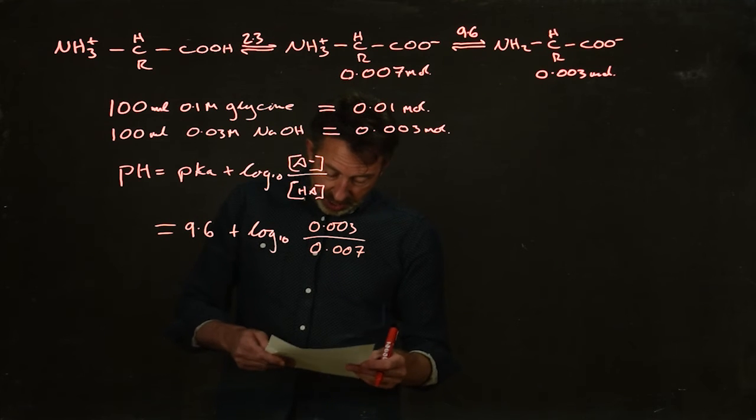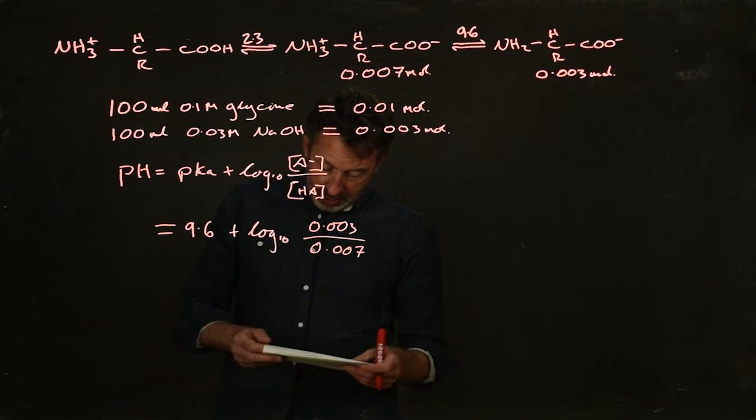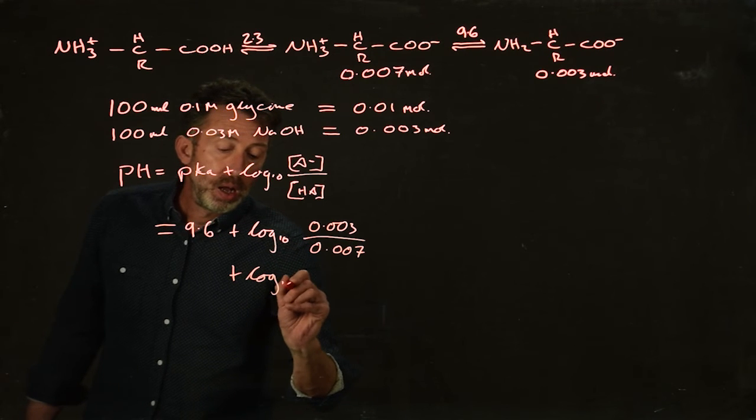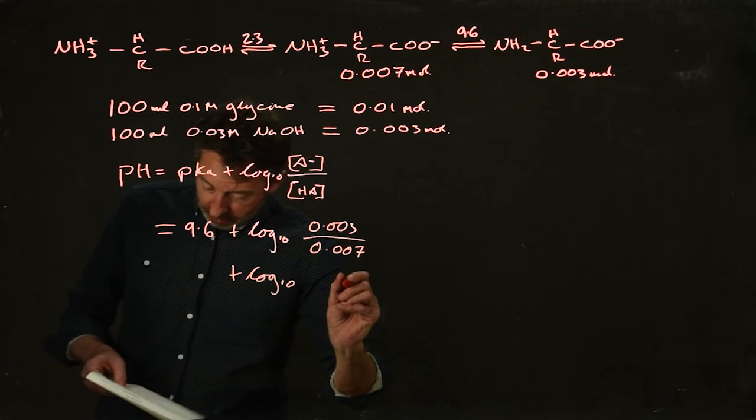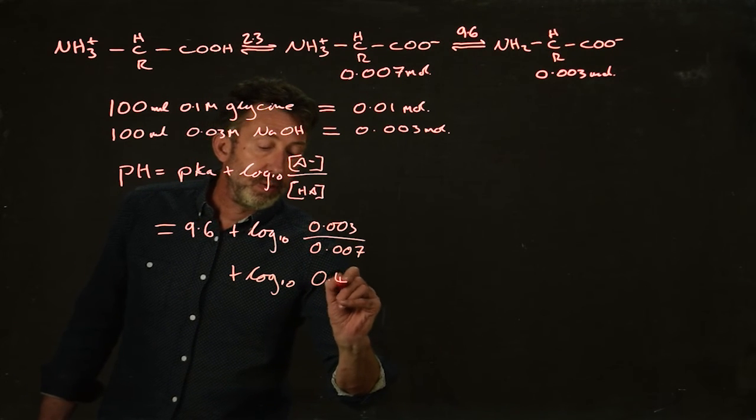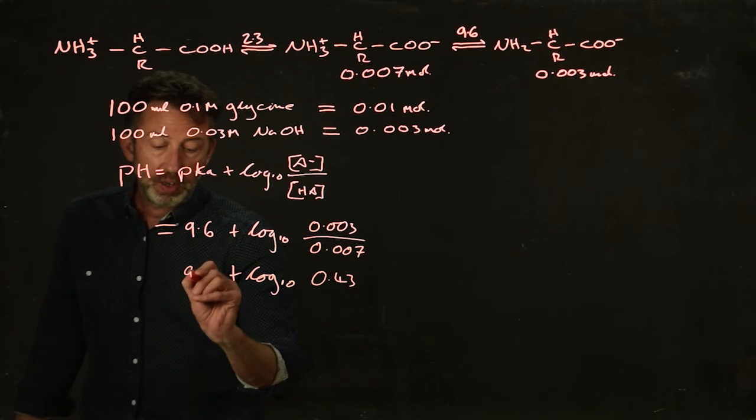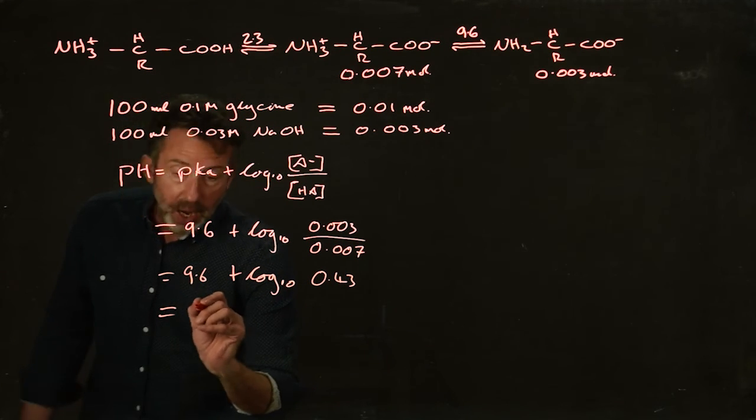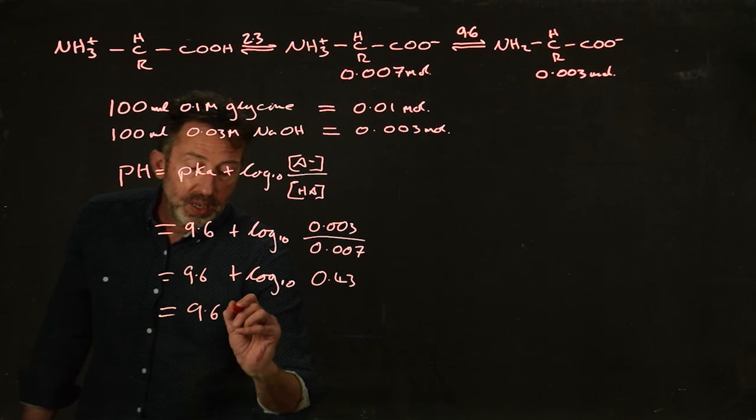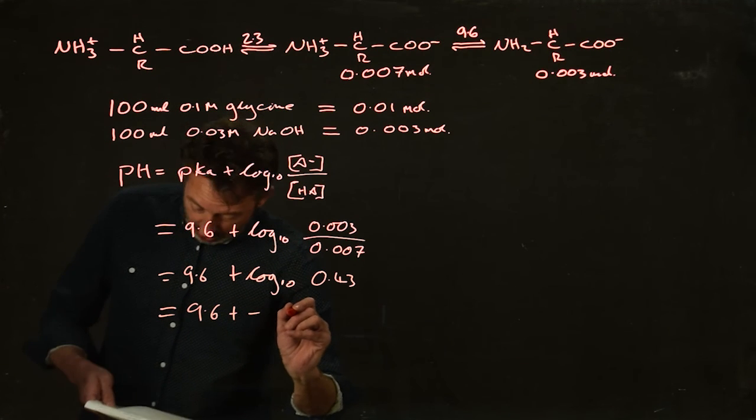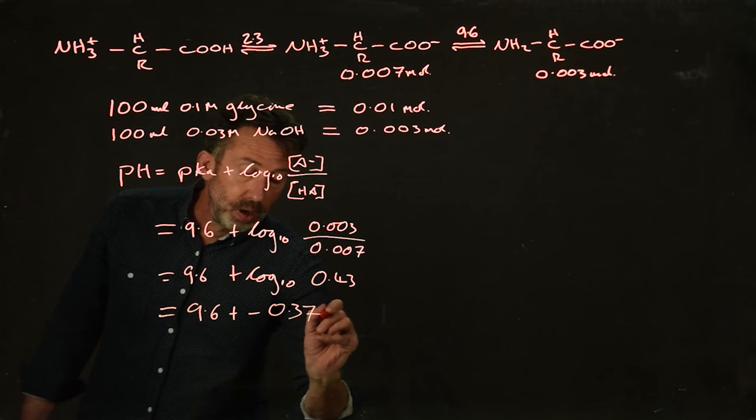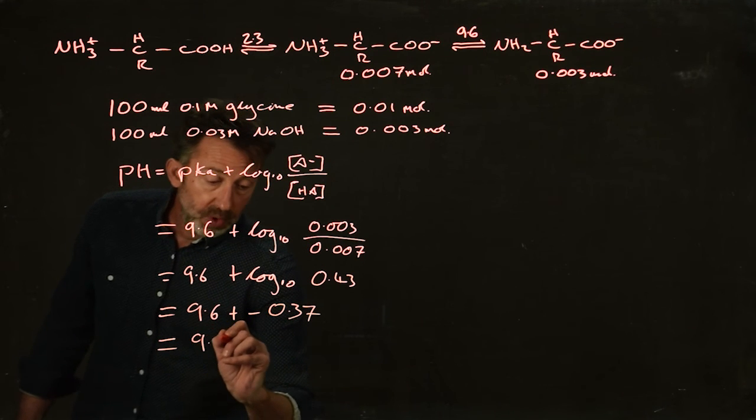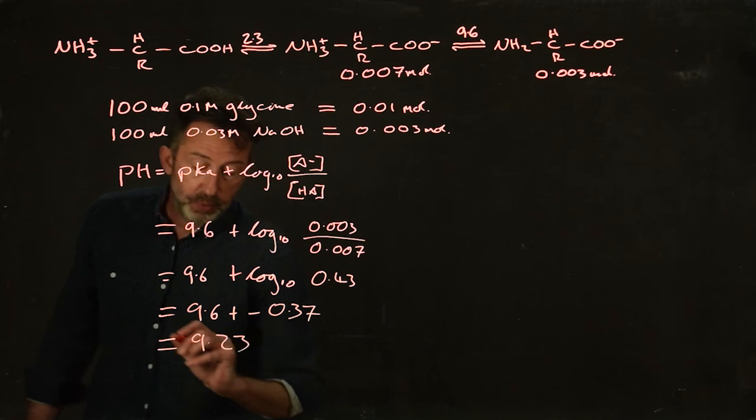If we put that into our calculator, that's going to be plus the log 10 of 0.43. So it's 9.6 plus the log 10 of 0.43, which is equal to 9.6 plus minus 0.37, which is equal to 9.2, or 9.23 if we're going to be accurate.